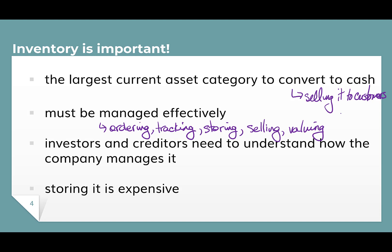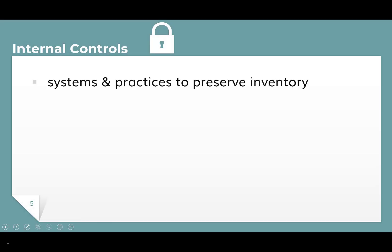Since inventory is so important and valuable, and companies are trying to carry less of it to reduce expense, they have to take steps to protect the inventory they have. These are called internal controls. Depending on what it is, inventory can be stolen, lost or misplaced, damaged, or it can expire if it is food or medication. The official term used to describe stolen inventory is inventory shrinkage — which is a really nice way of saying stolen stuff. Companies develop internal controls, which are systems and practices to preserve inventory and avoid these types of losses.